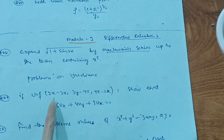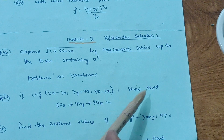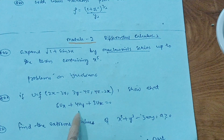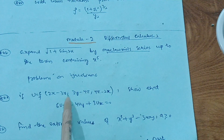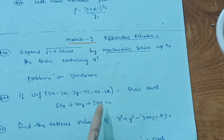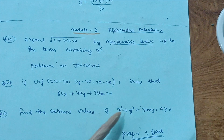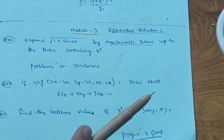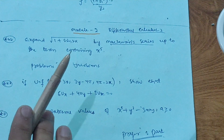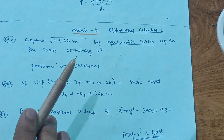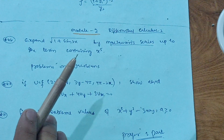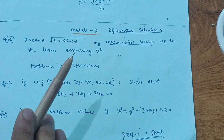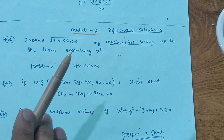Go through Jacobian problems and some theorem derivations. For example: if u = f(2x − 3y, 3y − 4z, 4z − 2x), show that 6u_x + 4u_y + 3u_z = 0. Also focus on finding extreme values — for example, find the extreme values of x³ + y³ − 3axy where a ≥ 0, finding maxima and minima. This is also a 12th class basic concept. These three topics are enough to cover Module 2.